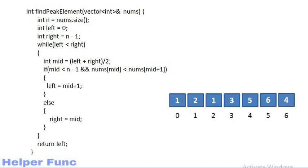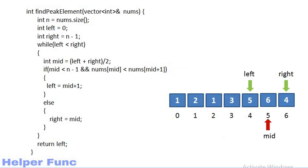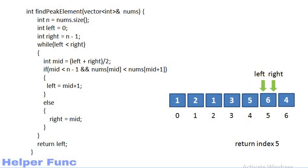Now let's do a dry run with this example. Initially left is at index 0, right is at index 6, and mid is at index 3. We compare the middle element and its next neighbor — as 3 is lesser than 5, we shift right and left will be pointing to mid plus 1. Now the element at index 1, that is 2, is also a peak element, but we only need to find one peak element and that can be found on the right side. Now mid is at index 5 and as 6 is greater than 4, the right pointer moves to mid. Now mid is at index 4 and as 5 is lesser than 6, left moves to mid plus 1. Left and right are now the same, so the while loop terminates and we return index 5 as our answer.